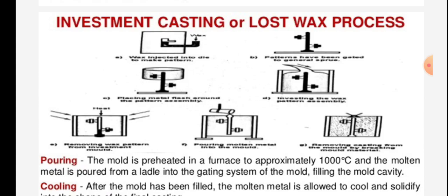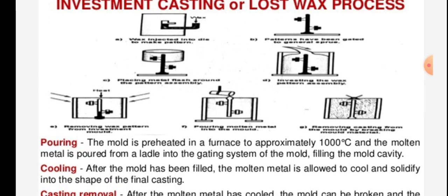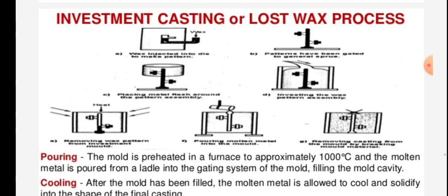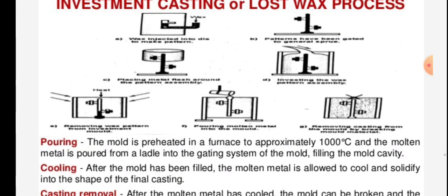This process is shown in the figure. Wax is injected into the die to make the pattern. Patterns have been produced; plastic metal is formed around the pattern assembly. These are the figures of investment casting or lost wax process, showing investing the wax pattern in the matrix.